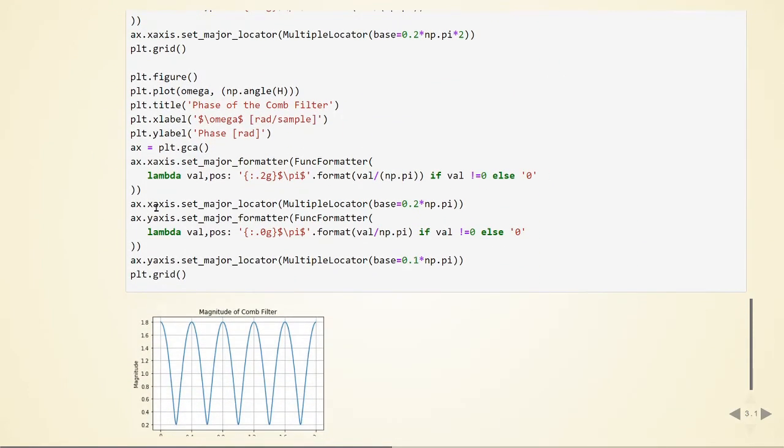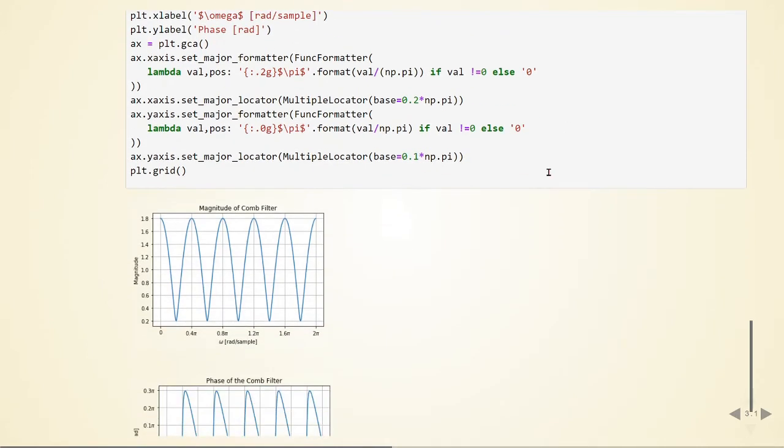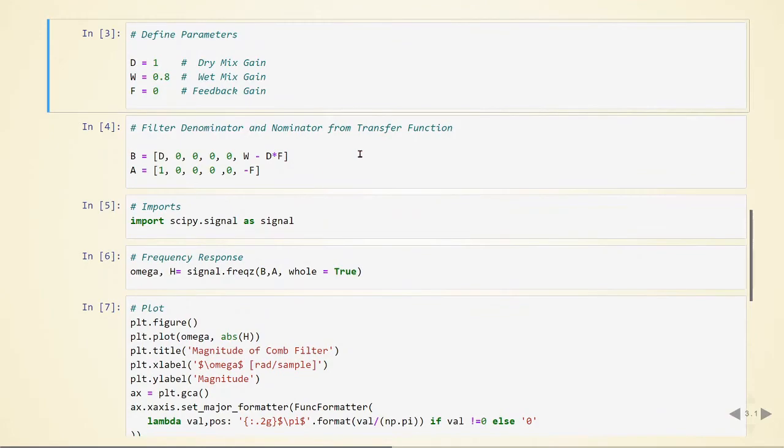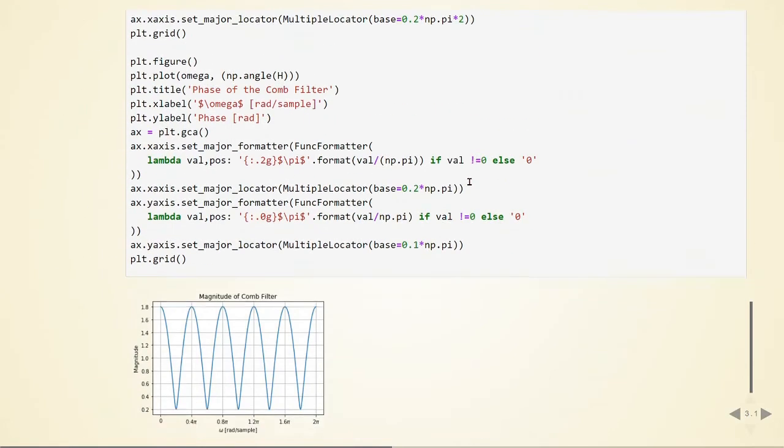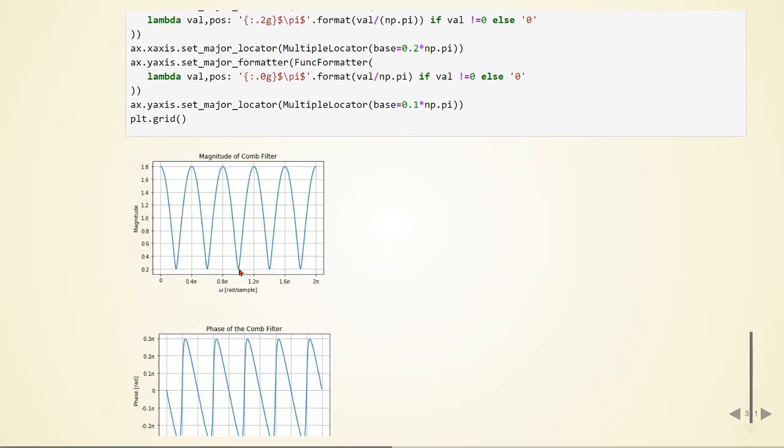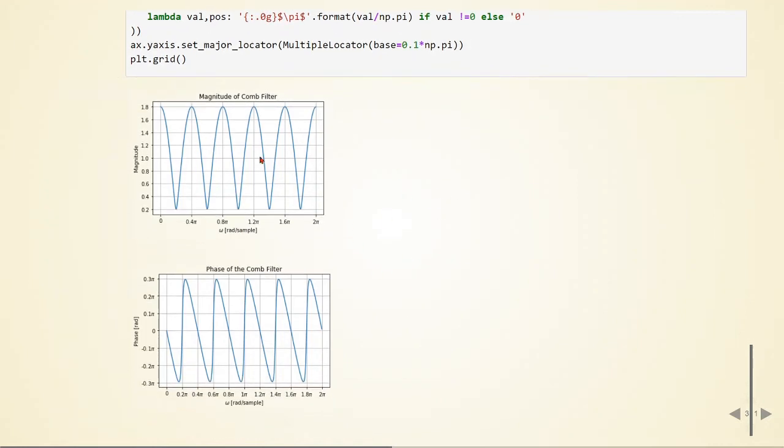Here we see the magnitude of the comb filter and we see the one, two, three, four, five. So this is the relation I mentioned between m equals to 5. If we would just plot until π, we would not see the five, but just for visualization. And here we have the phase of our comb filter.